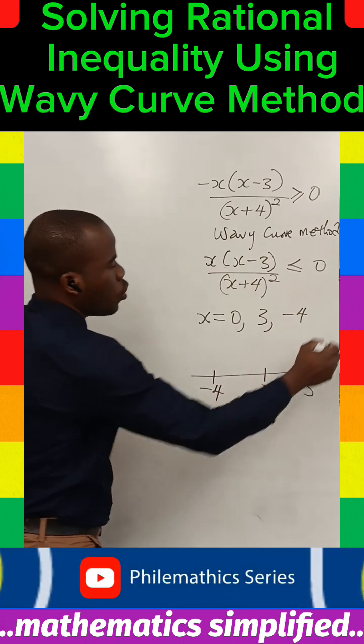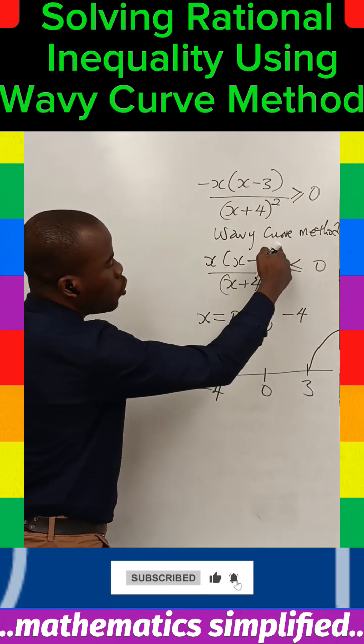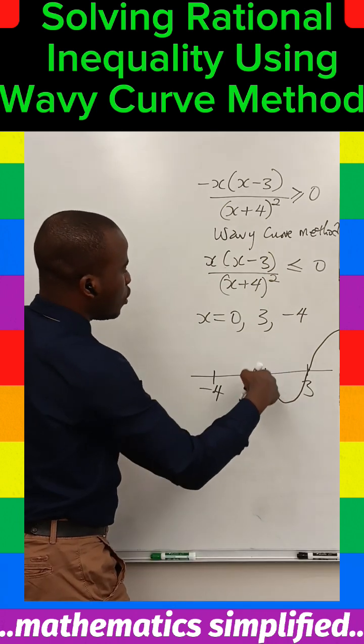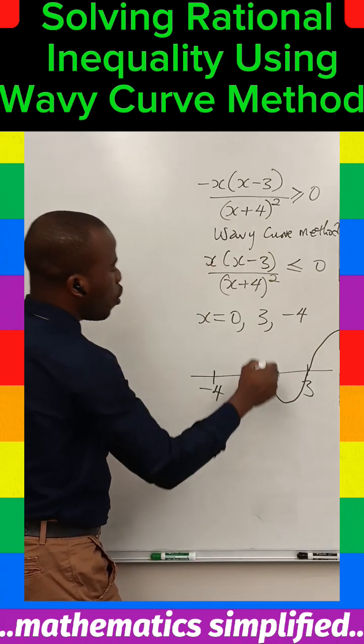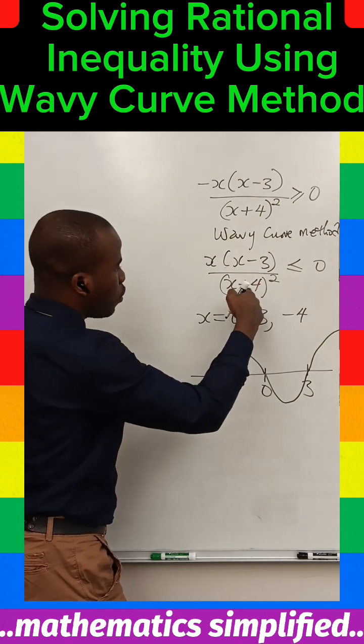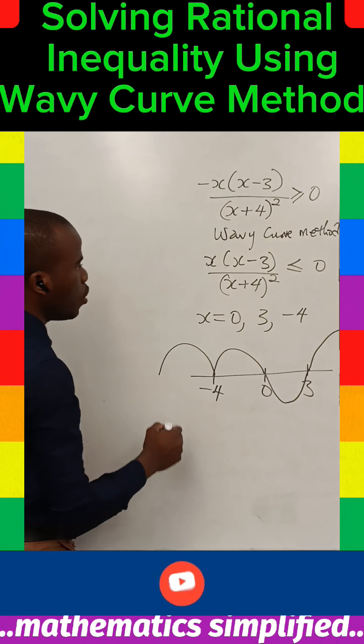So you start from the top here. At three it is odd, it changes. At zero the power is odd, it changes. At minus four the power is even, it remains.